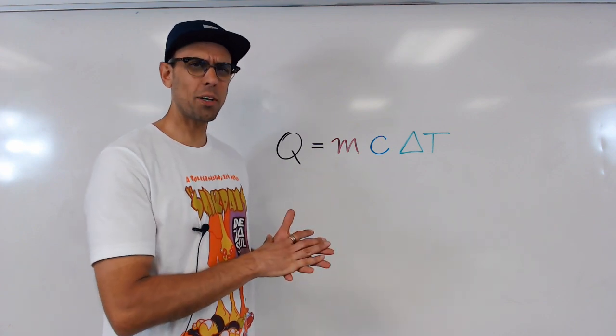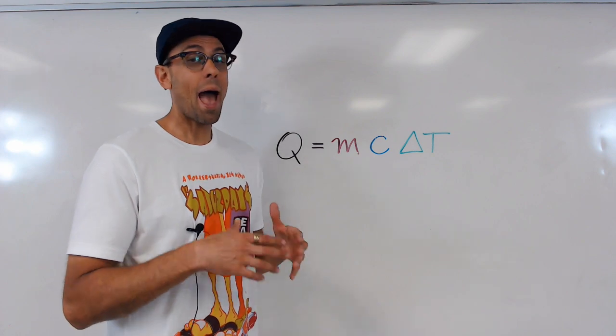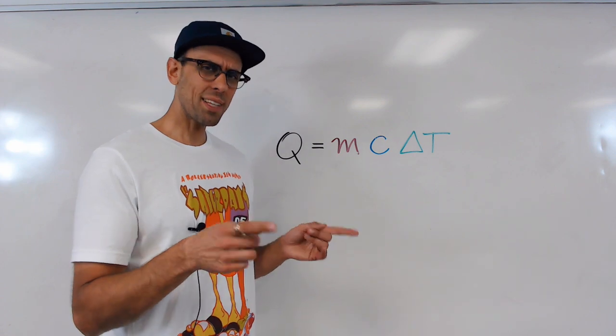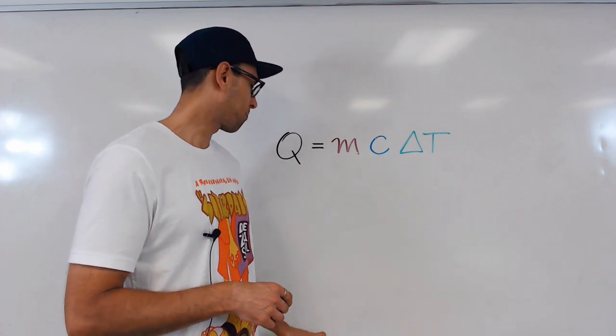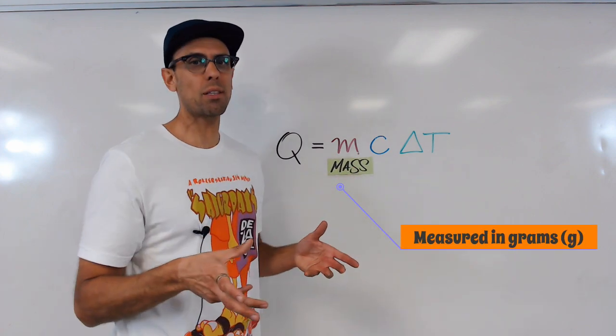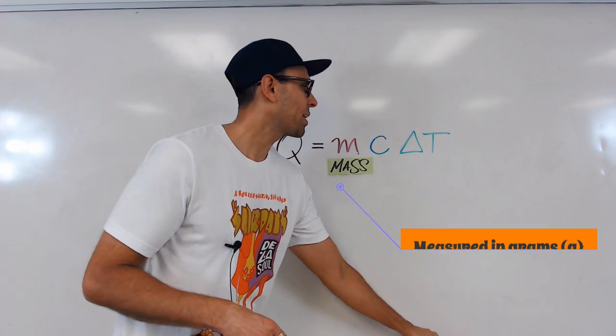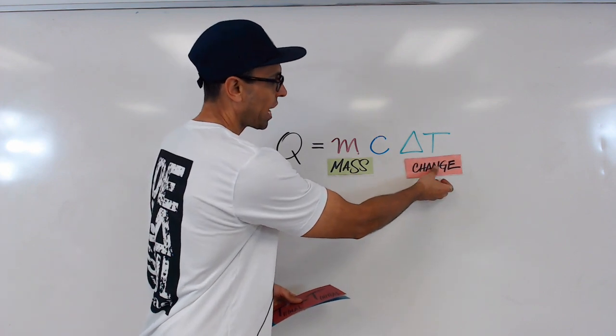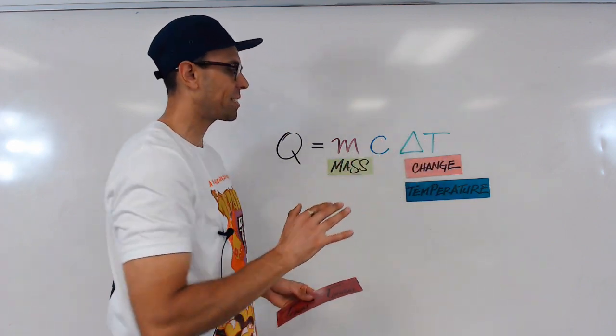So when we scan this equation, we notice that there are some variables that feel very familiar to us and others look a bit strange, especially if we're new to thermodynamics. So the ones that we know and have used before are M and delta T. Now our M is going to represent mass, and that's typically expressed in the unit grams. And then we have delta T. Now the delta is a Greek character, and in math and science it means change. And of course T is temperature, so this is our change in temperature.